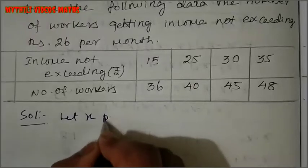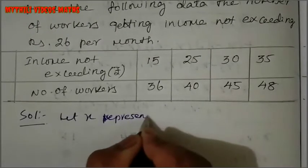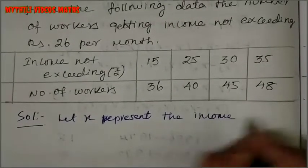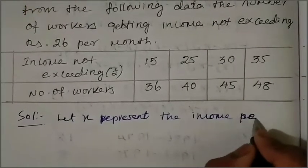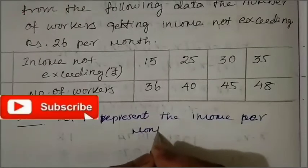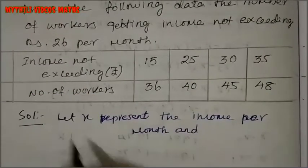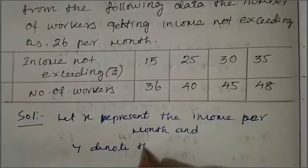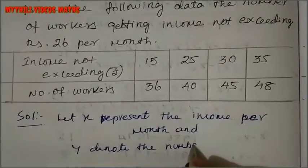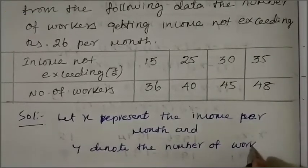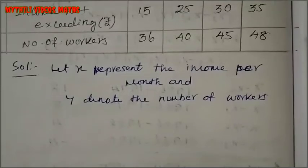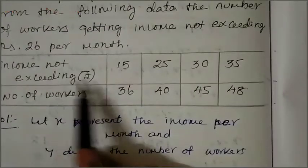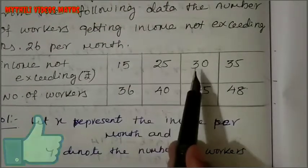Let X represent the income per month, and Y denote the number of workers. We list the values as X0, X1, X2, X3.